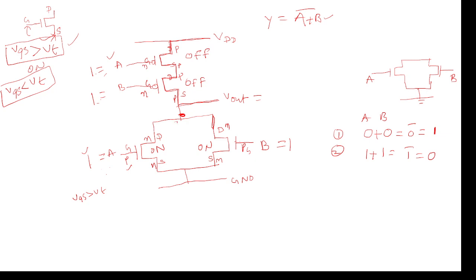There is no flow from VDD through transistors T1 and T2 to the output side. Hence the output is zero. This confirms the NOR gate behavior for input A=1, B=1.